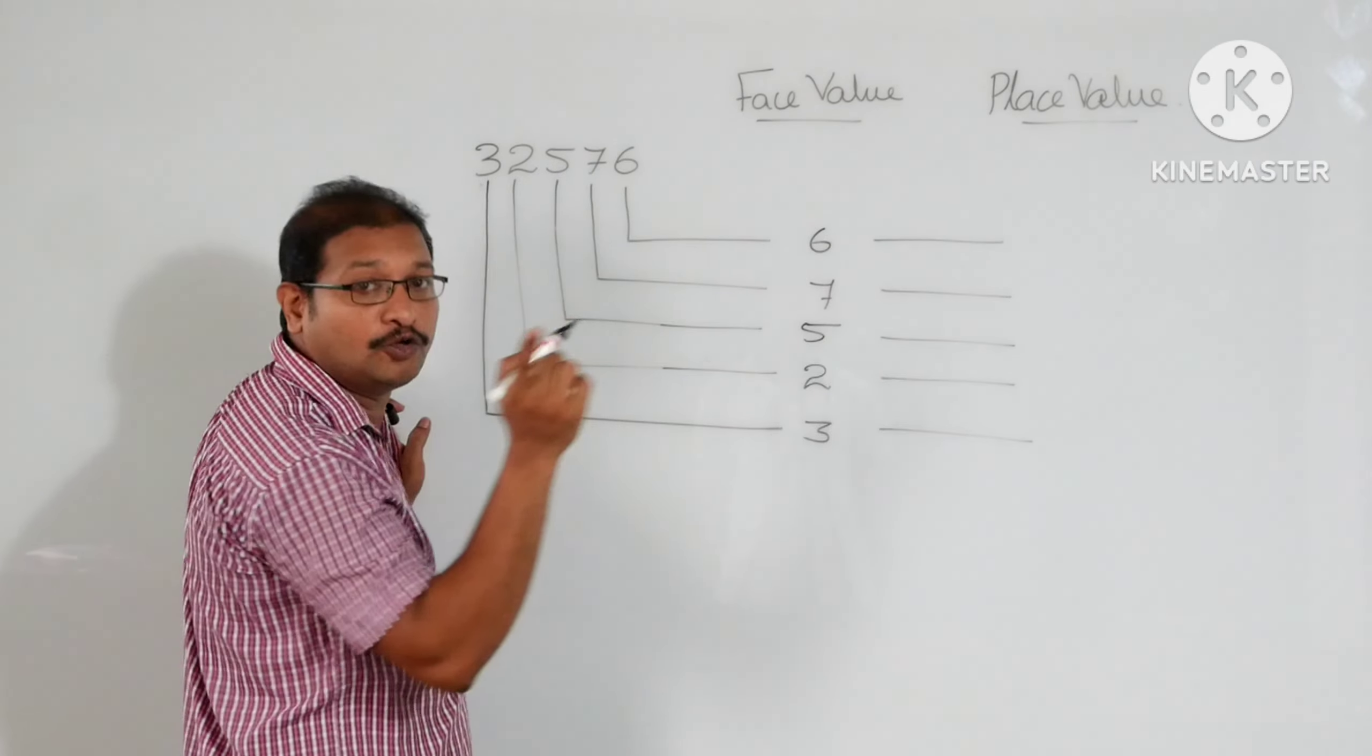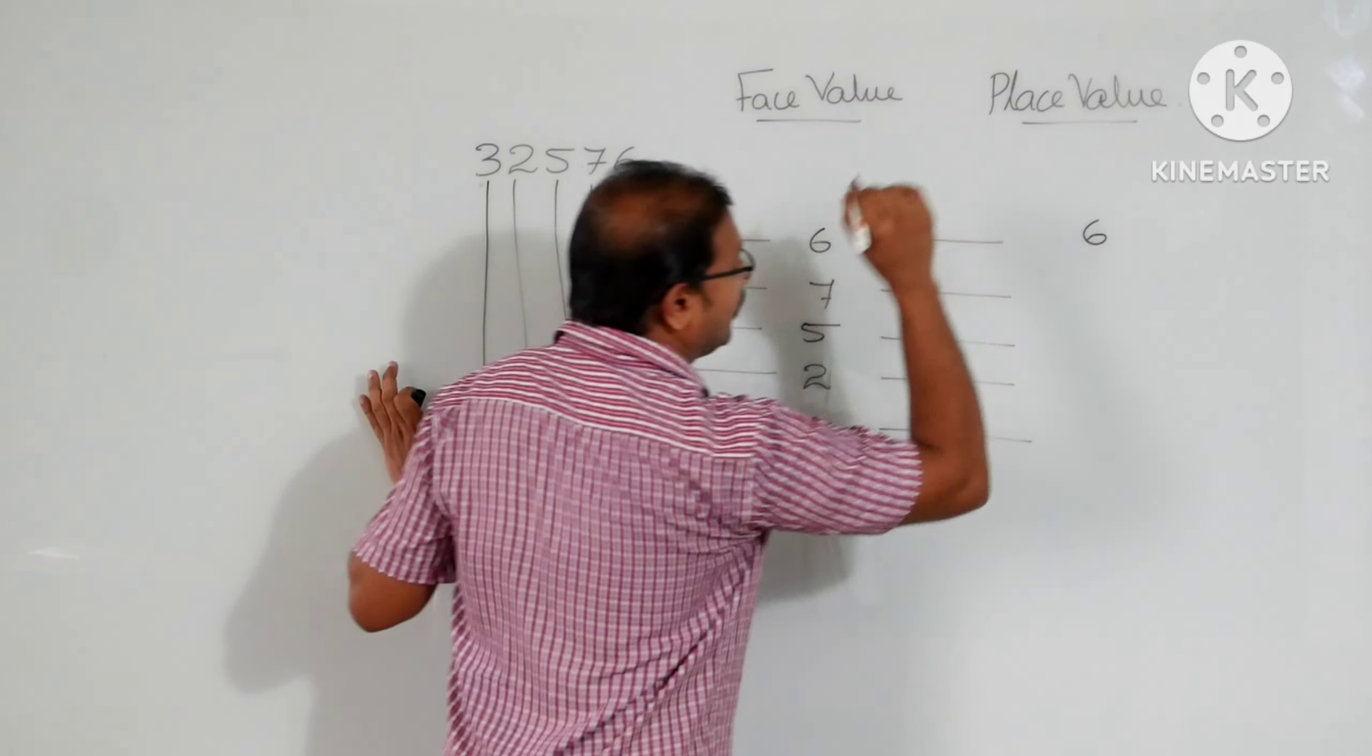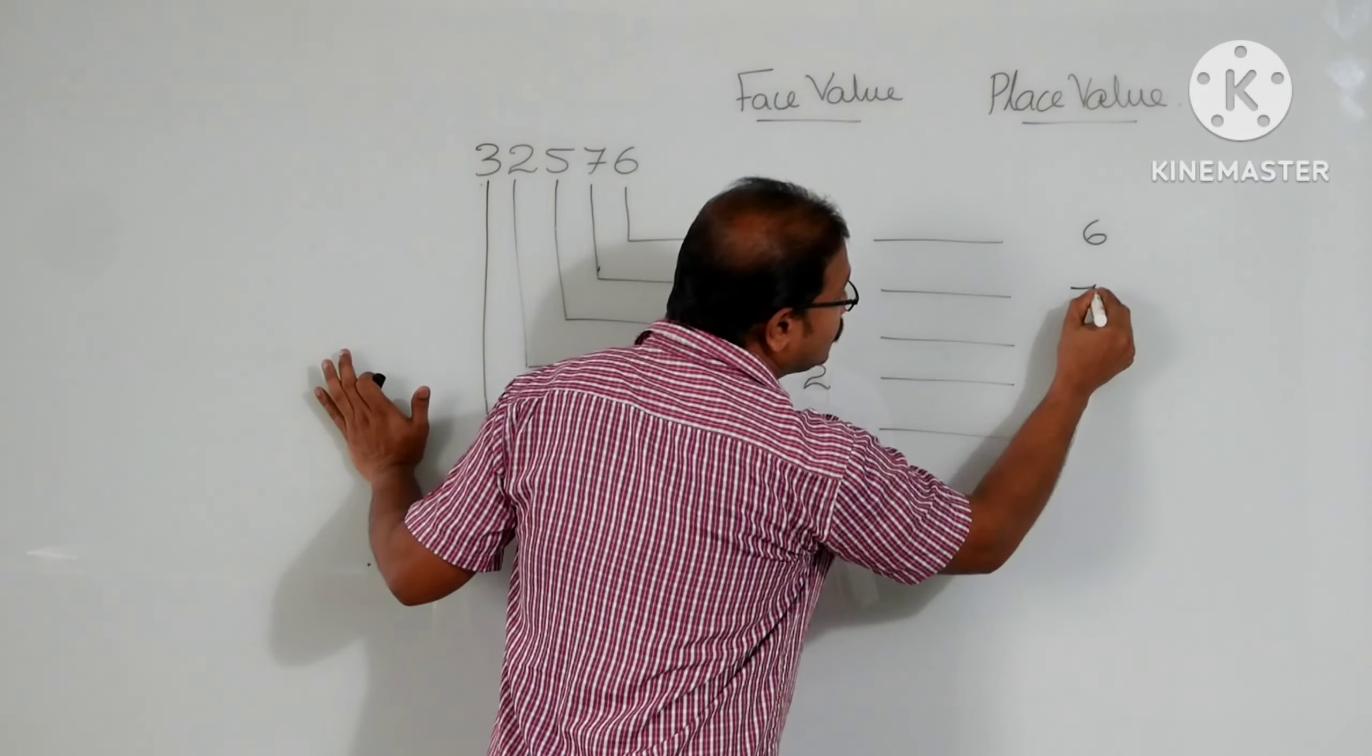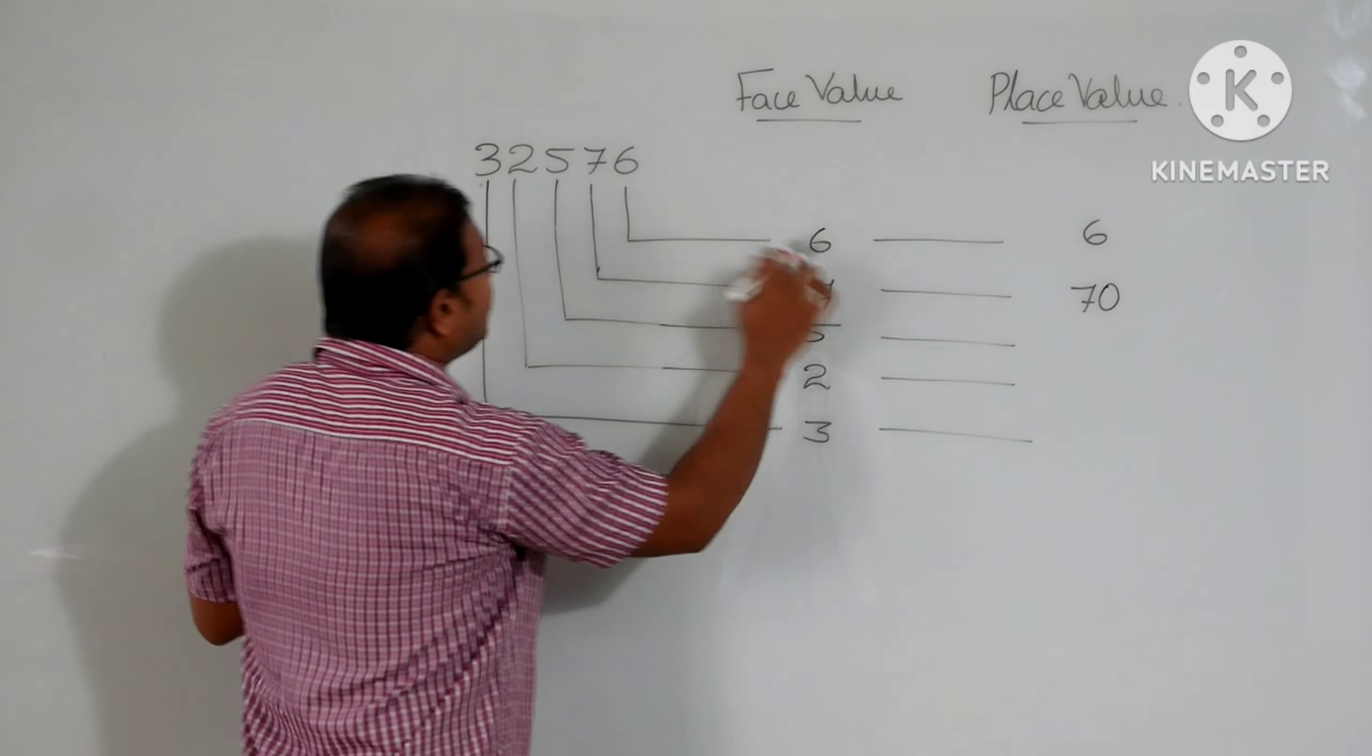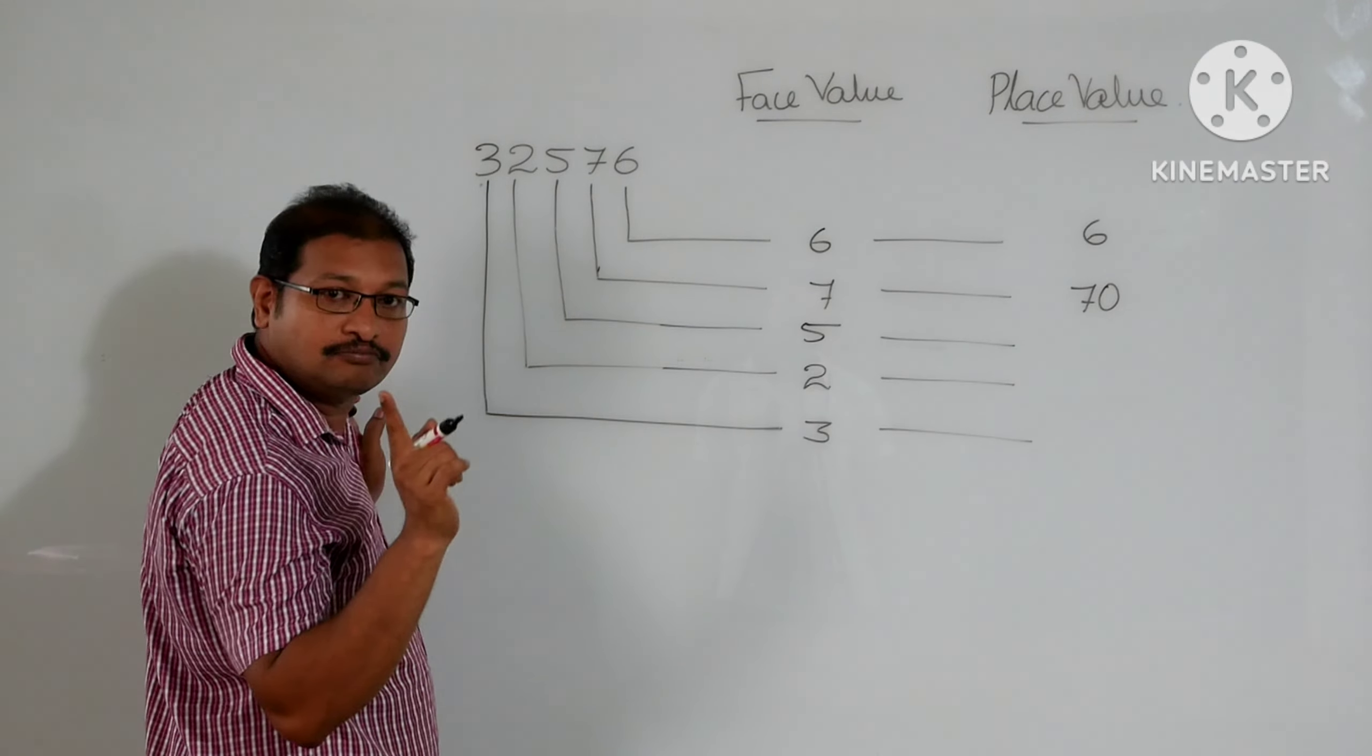first we know that 6 is in the unit place, so 6 directly is the place value. Once it goes to 7, we know that 7 first will write. After 7, one digit is there. That means 1, 0 will keep. That means 70 is the place value of 7 from this number.